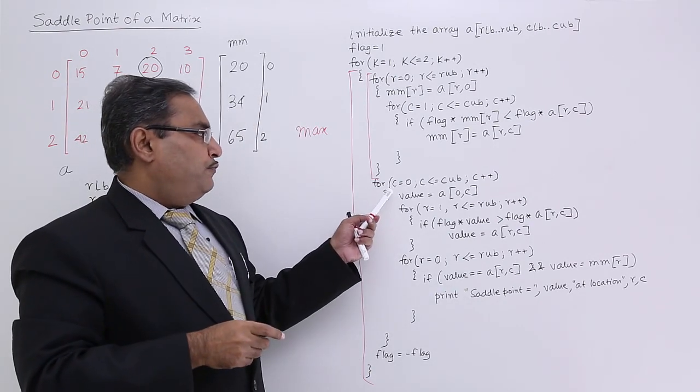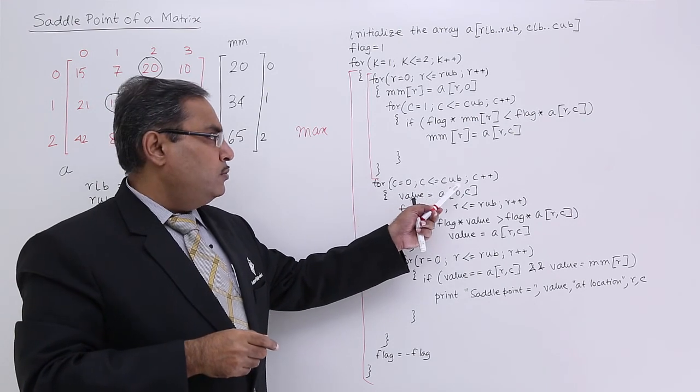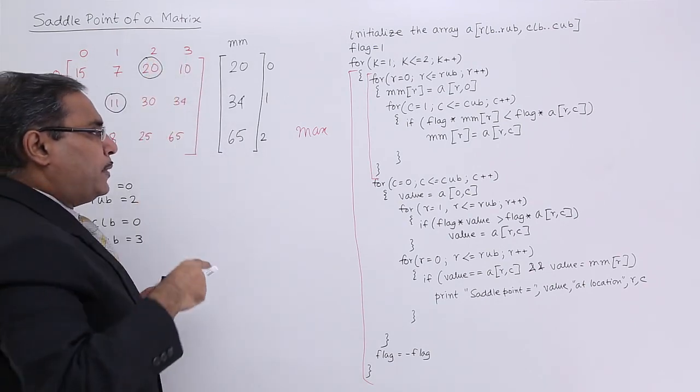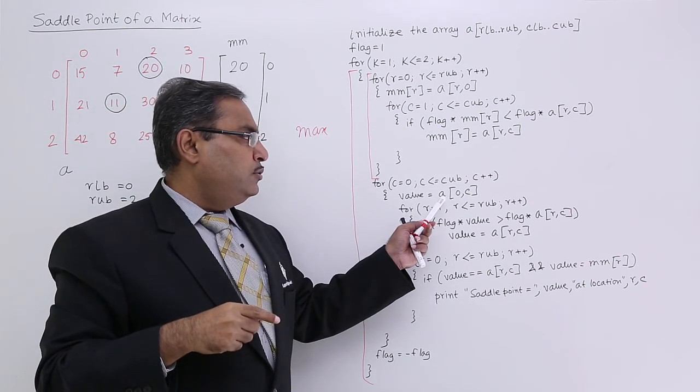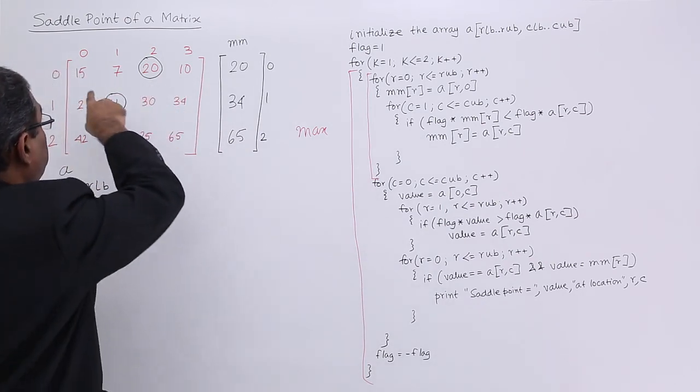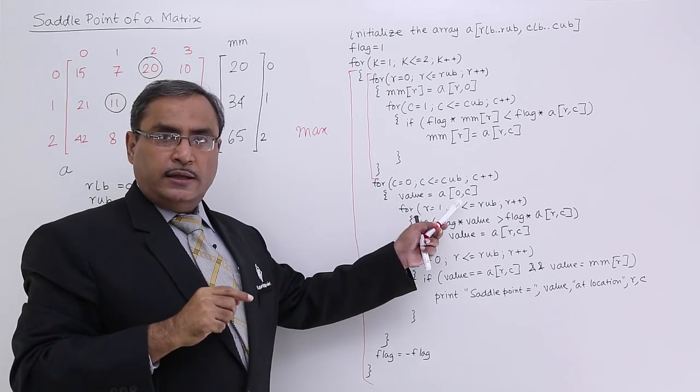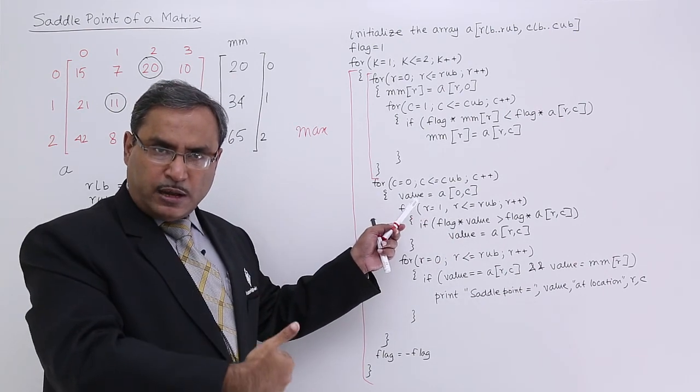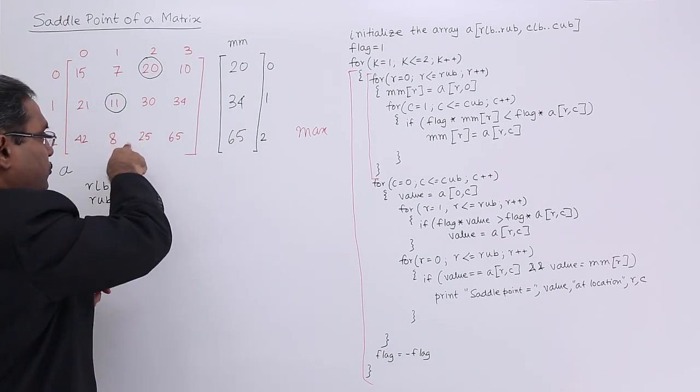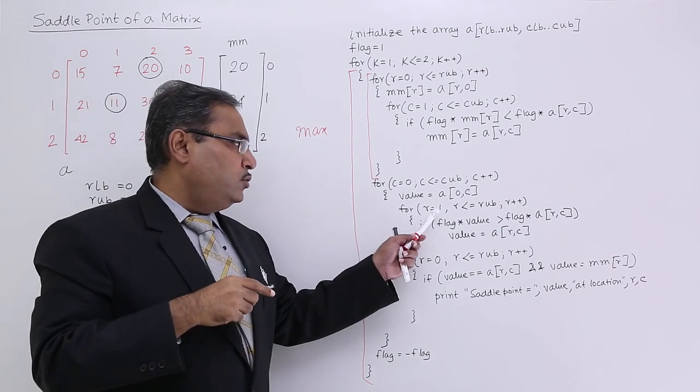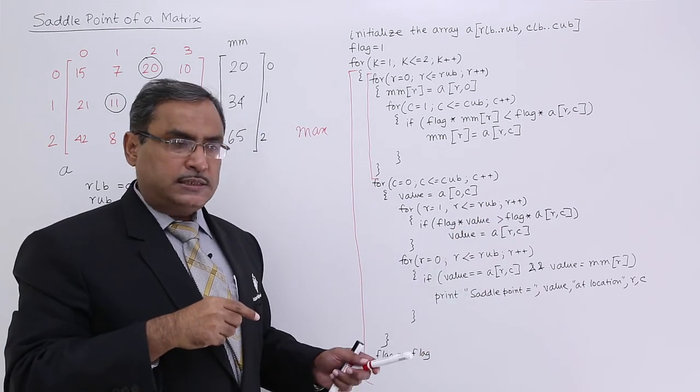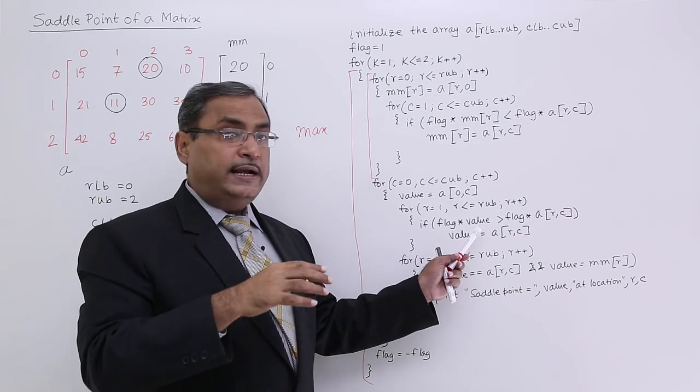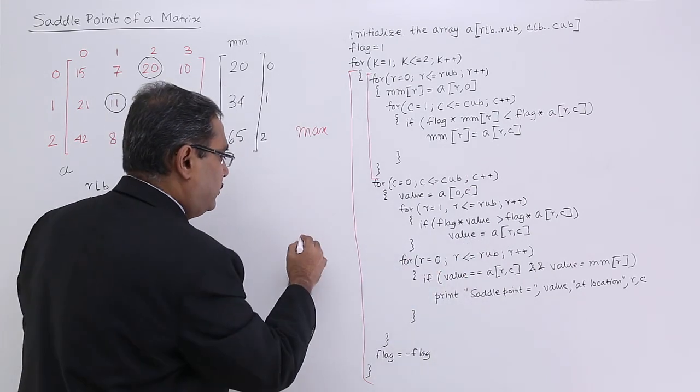For c is equal to 0, c less than c upper bound and c plus plus. That means I am now scanning in this way. Value is equal to a 0 c. That is the 0th row, the first data. The cth column will be kept in value. Now let me scan the rest number of rows. For r is equal to 1, r less than equal to r upper bound r plus plus. If flag star value is greater than flag star a r c, if the value is greater, then I am updating. That means I am calculating here min.